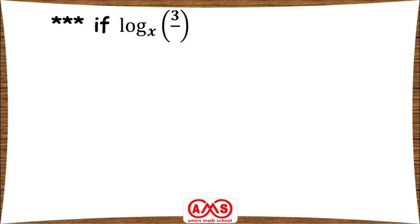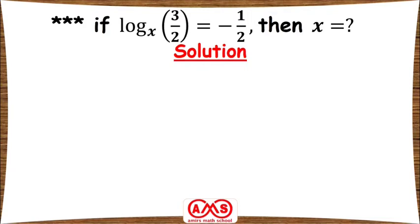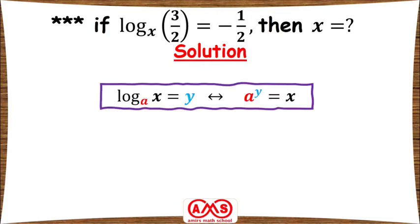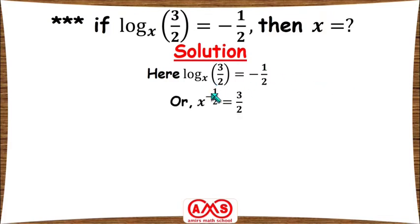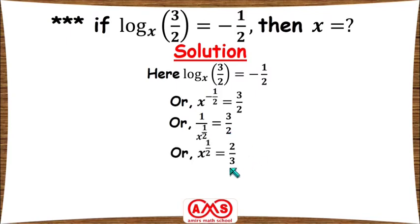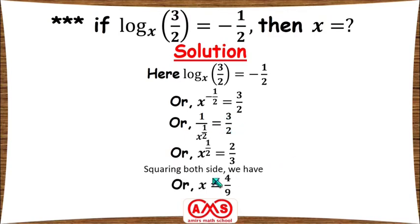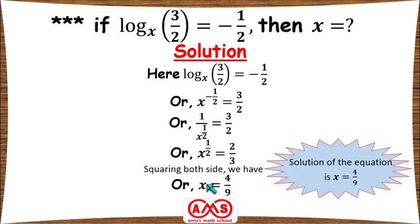Let's see another example: if log base x of (3/2) equal to minus half, then what is the value of x? Using the conversion formula log base a of x equal to y implies a to the power y equal to x, we write x to the power minus half equal to 3/2. This gives 1 over x to the power half equal to 3/2, so x to the power half equal to 2/3. Taking the square on both sides, x equal to 4/9. So the solution is x equal to 4/9.